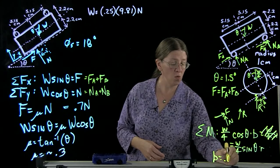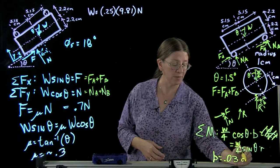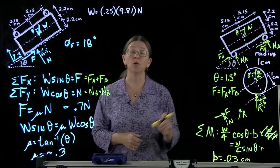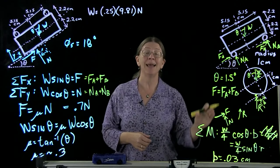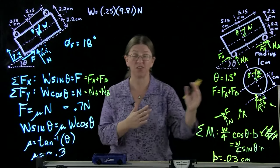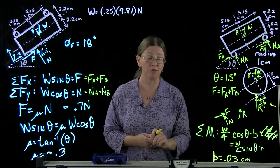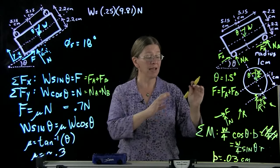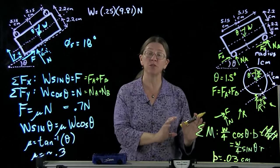Given that your radius is 1 centimeter, b is 0.03 centimeters. Remember that your coefficient of rolling friction has units of length, because it's actually this distance that we had to shift that R value. Once you have those bits, that's the coefficient of rolling friction.